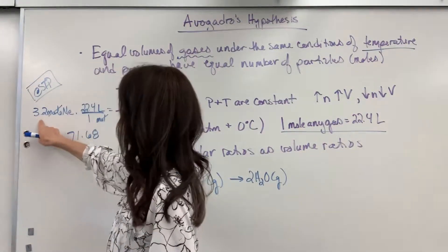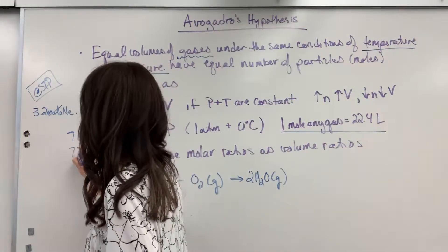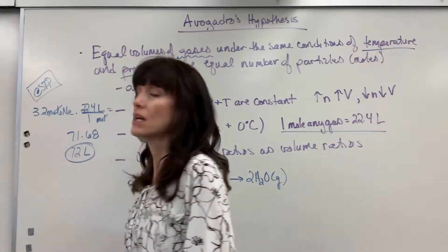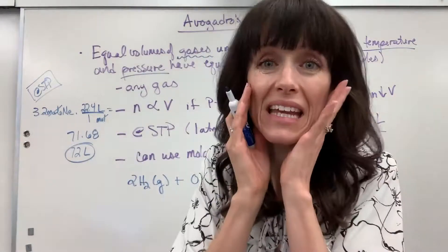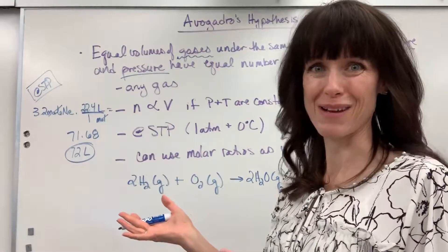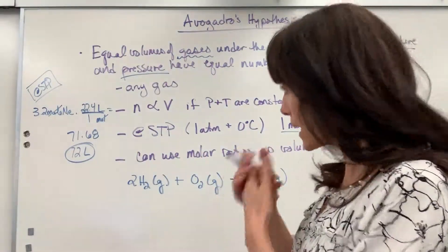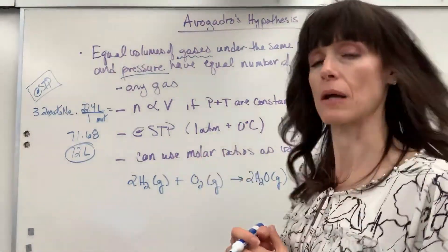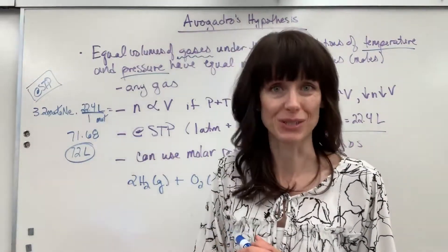I have two sig figs here. Let's round to two sig figs. So, 72 of my unit is liters. If I have 3.2 moles of any gas, but right now I'm talking about neon, at STP it is going to take up a volume of 72 liters.